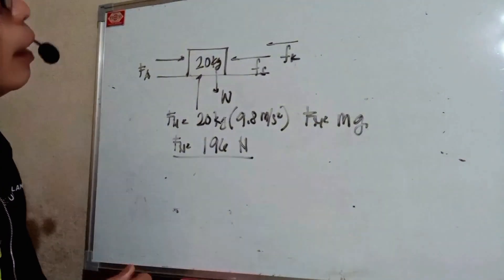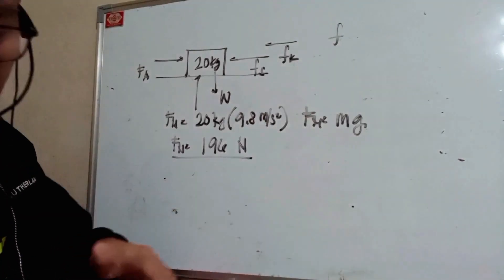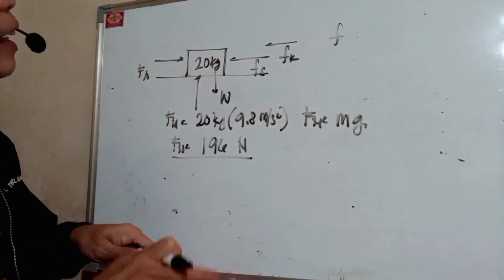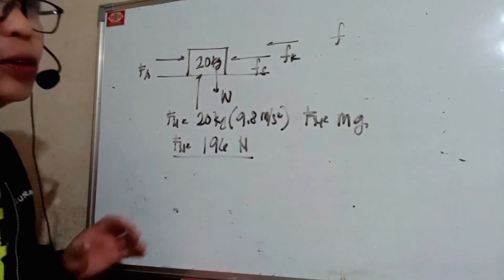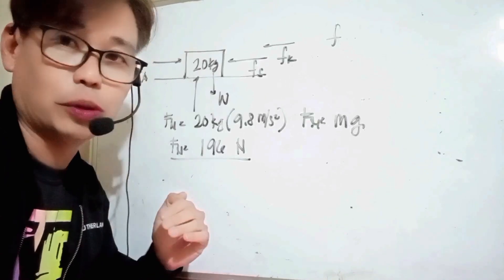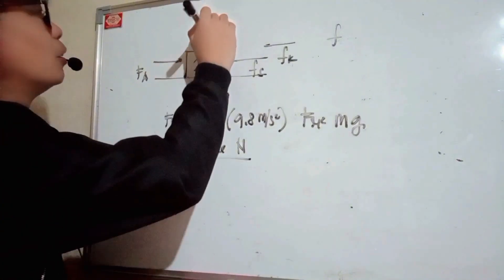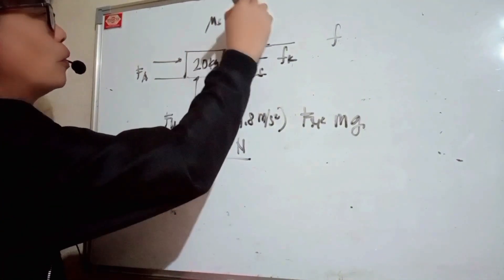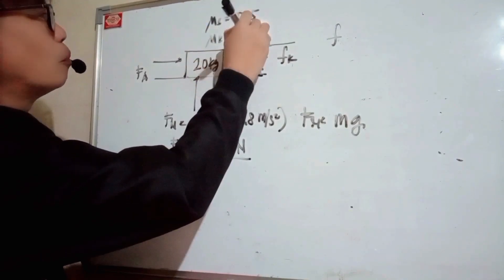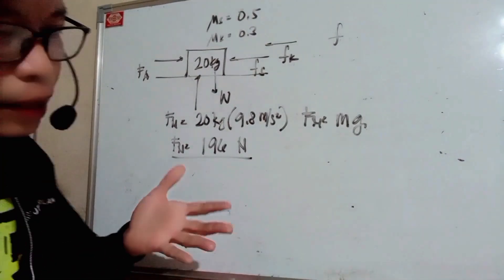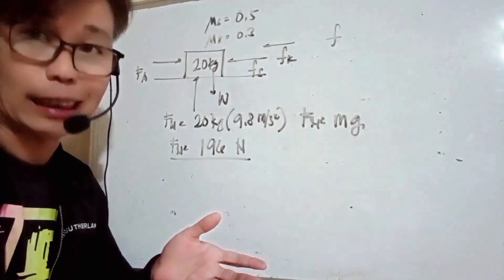Let's try to solve for the frictional forces. Your F equals mu multiplied by your normal force. Now let's assign a value for mu — it depends on the object or the surface. For example, your mu for static is 0.5 and your mu for kinetic is 0.3. Normally, the coefficient for kinetic friction is less than static friction.